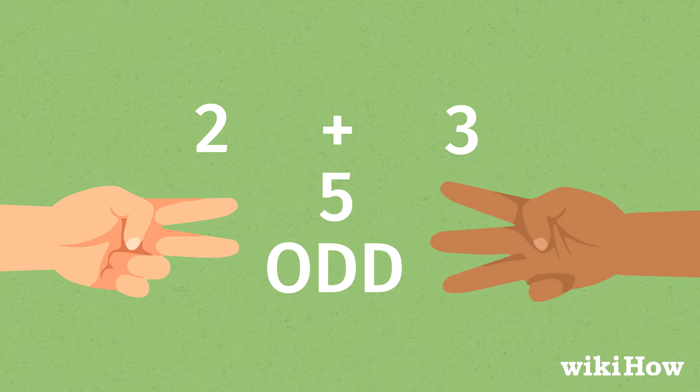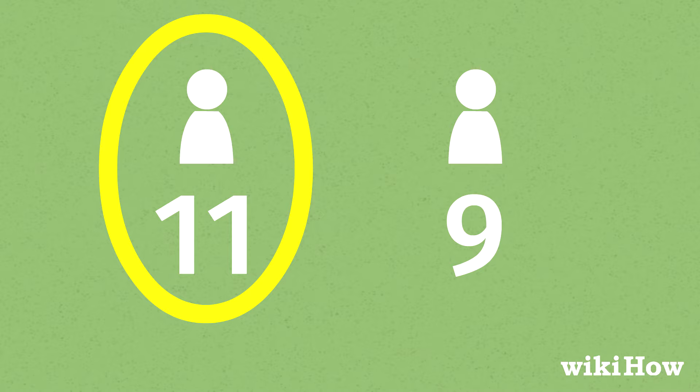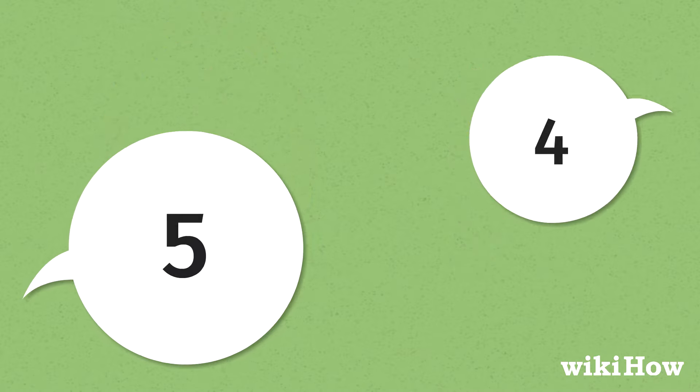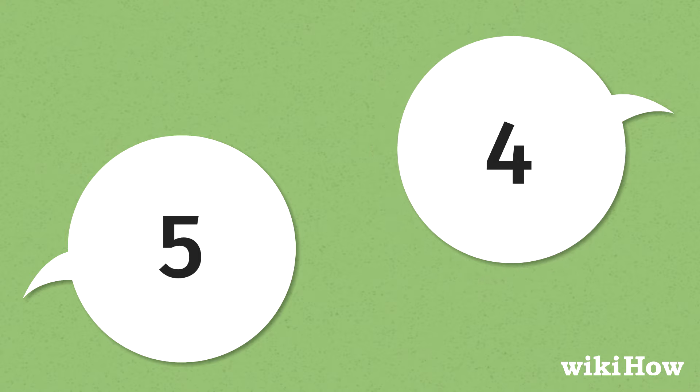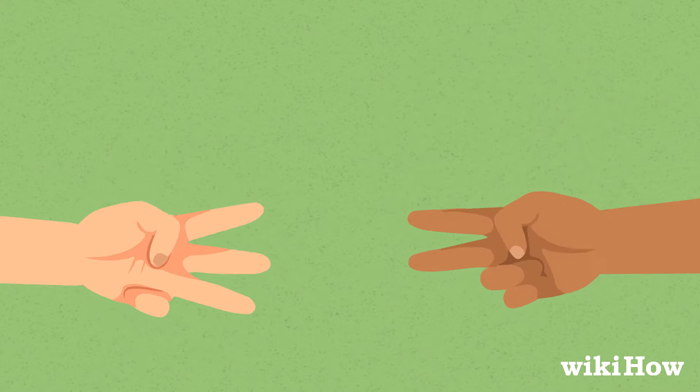Whoever has the most points at the end of all the rounds wins the game. For a more advanced version of odds and evens, have each player yell out what they think the total will be for each round as they're throwing their hands.